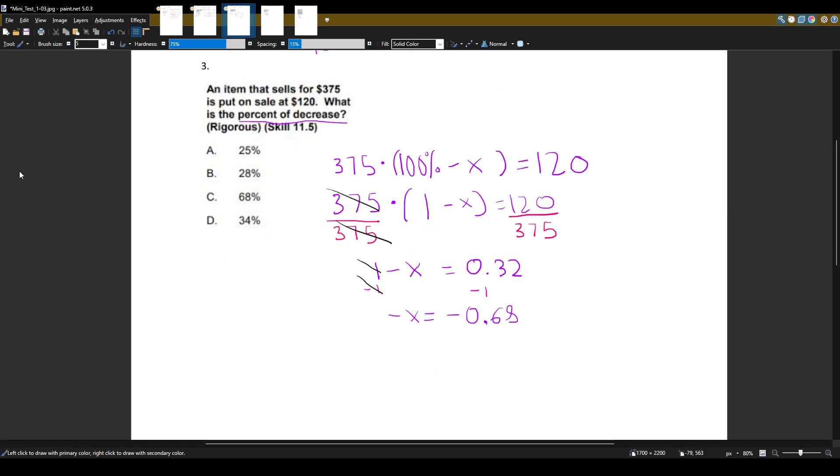Again, I'll use my calculator and I get negative 0.68. Finally, we don't want negative X, we want positive X. So let's divide both sides by negative 1. The negatives will cancel, and X equals 0.68.